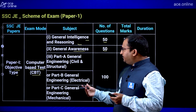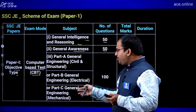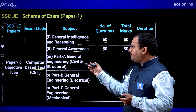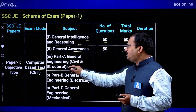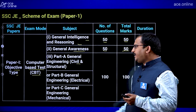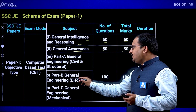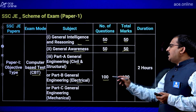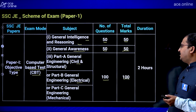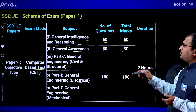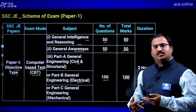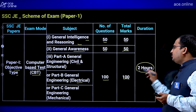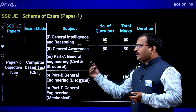Then you have three parts — Part A, Part B, and Part C — which consist of various department papers. Part A is Civil and Structural Engineering, Part B is Electrical, and Part C is Mechanical. There are 100 questions for 100 marks in this section, making a total of 200 questions for 200 marks in Paper 1, with a duration of 2 hours.